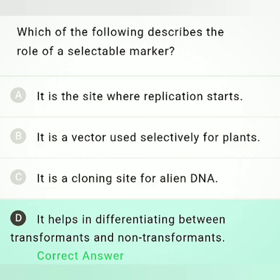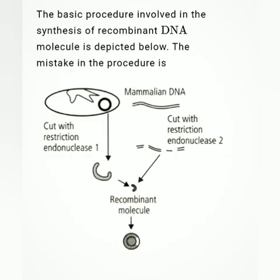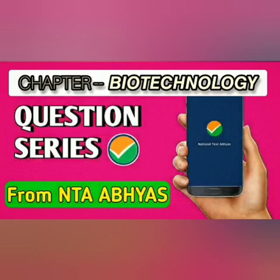Which of the following describes the role of a selectable marker? The role of a selectable marker is to help in differentiation between transformants and non-transformants — option D is the correct answer. In the synthesis of recombinant DNA depicted in the next question, the mistake is that two restriction endonucleases are used; two different restriction endonucleases cannot be used together in this procedure.